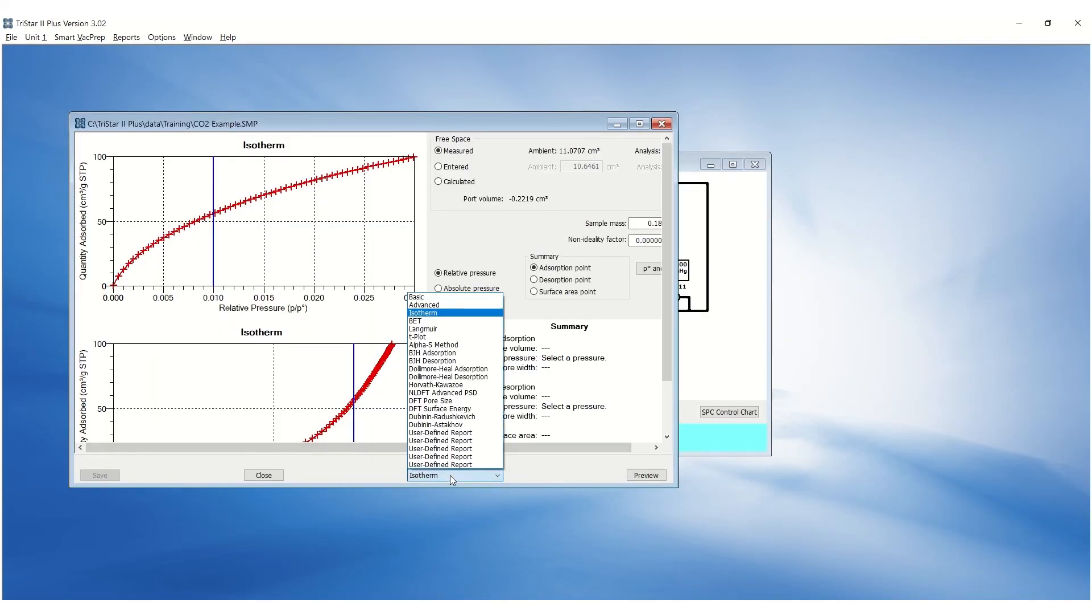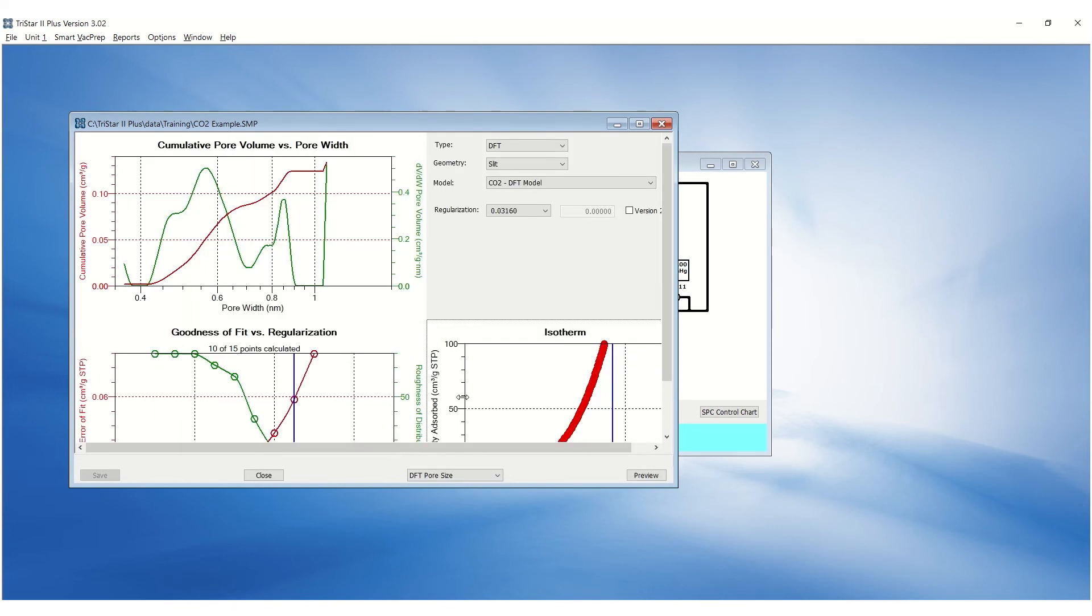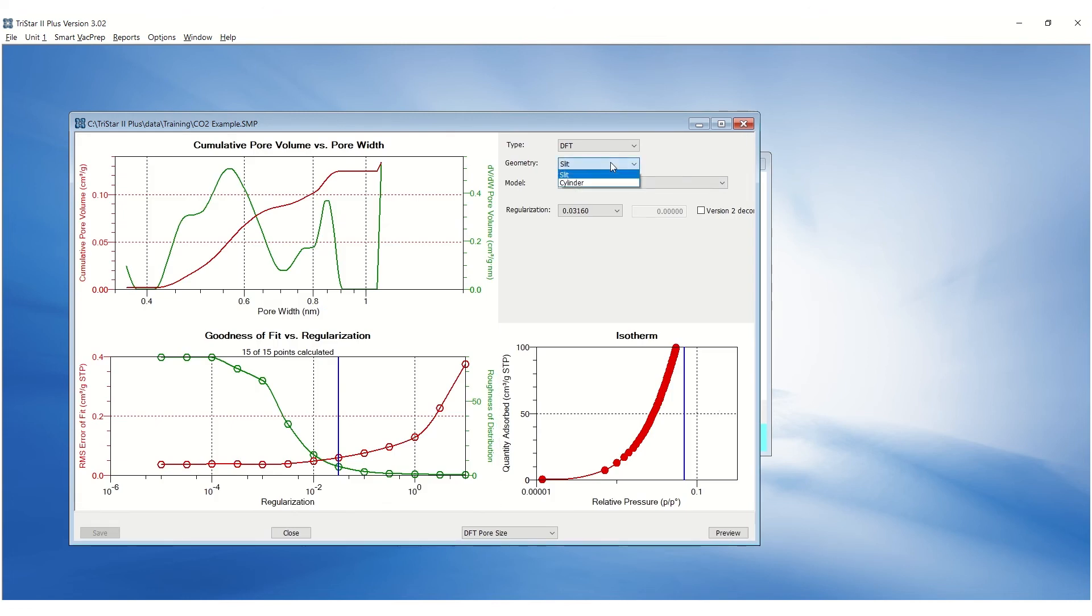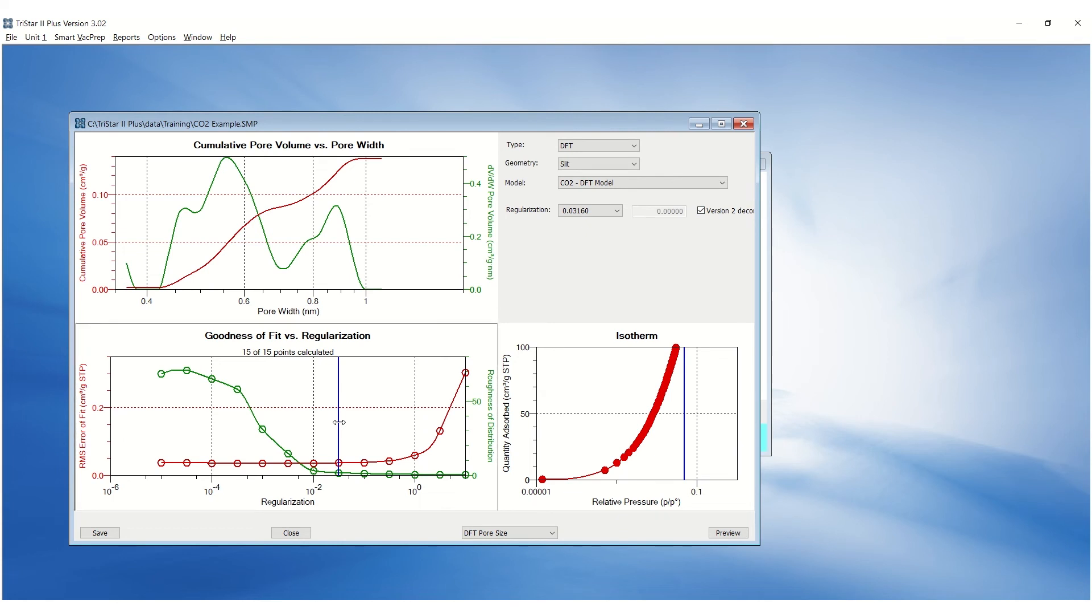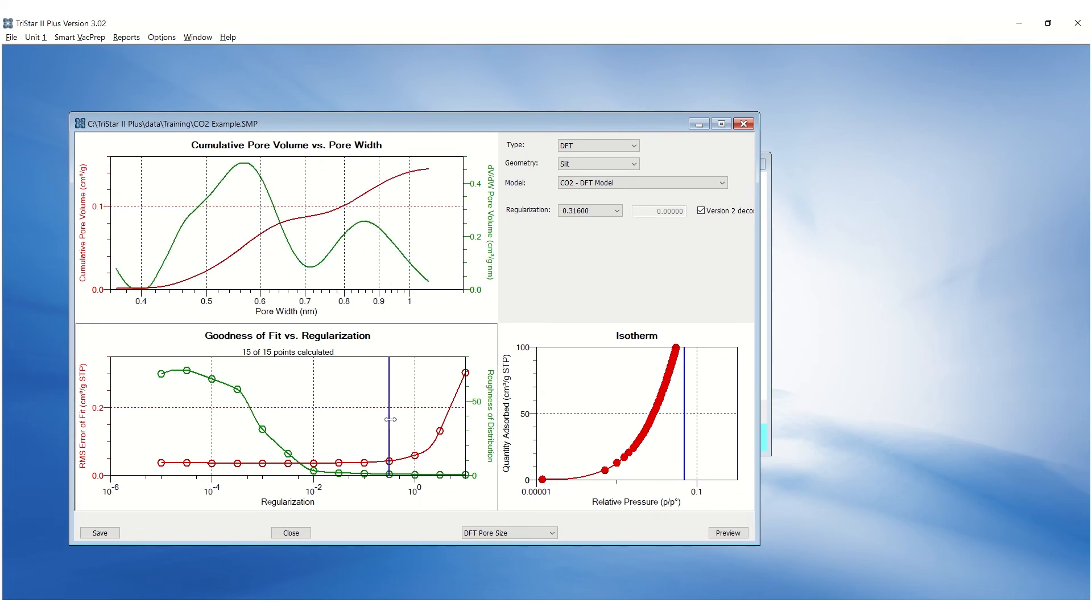To generate a pore size distribution with CO2 isotherm, click on the drop-down menu and go to DFT Pore Size. Select the slit geometry for carbon samples and the appropriate model. Select Version 2 Deconvolution to minimize the roughness. Adjust the regularization to minimize the error and roughness to view the pore size distribution.